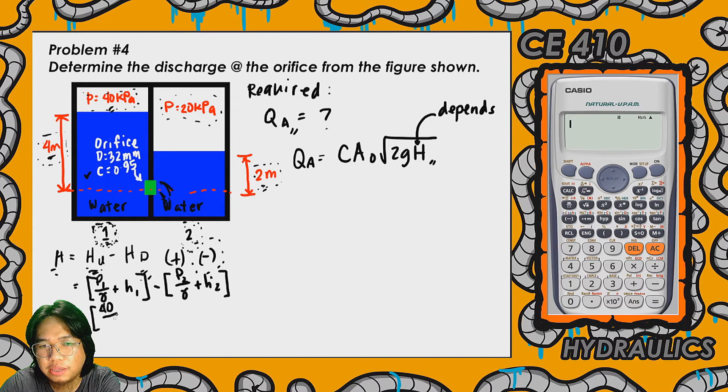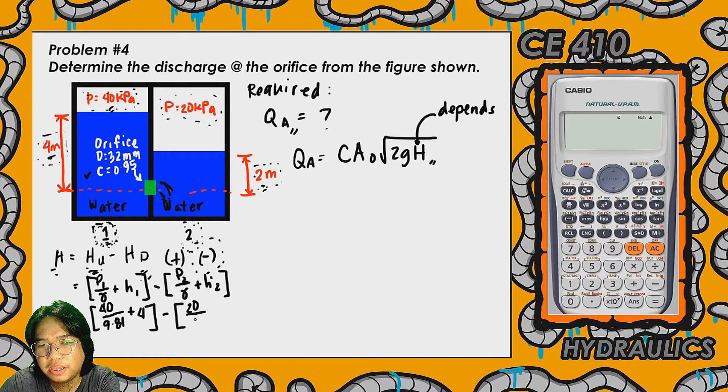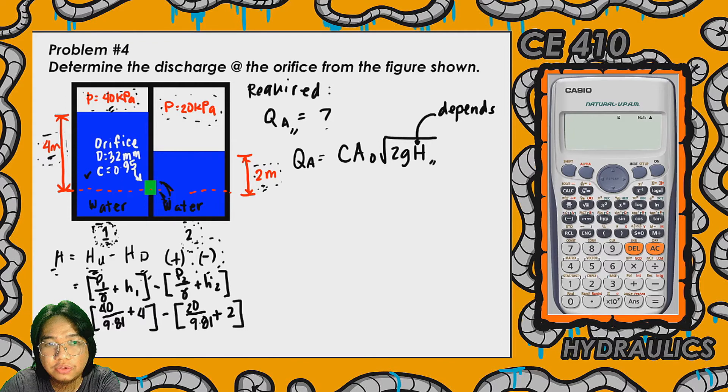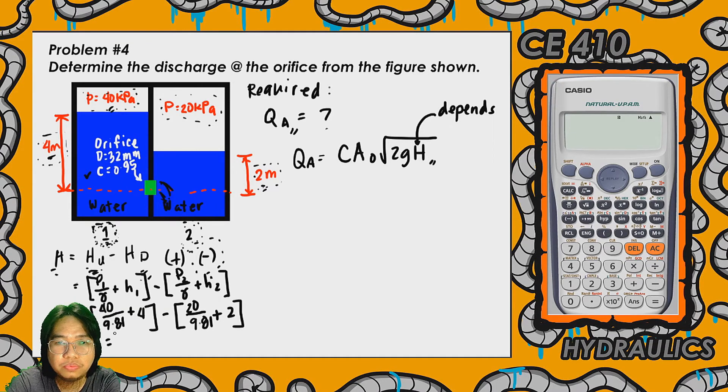For this one, that's 40 kPa. Since the pressure is in kPa, we're using 9.81 kN per cubic meter, plus the head of the water at chamber 1, which is 4 meters, minus input gauge pressure of 20 kPa over 9.81 kN per cubic meter plus 2 meters. Let's compute for the value of H using the calculator.